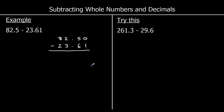We start with the smallest column, which is the hundredths this time. And I've got zero take away 1; I don't want to do that. So I'm going to steal one of the tenths, and that'll be worth 10 in the hundredths. 10 take away 1 is 9. Now the tenths: I've got 4 take away 6. Again, I don't want to do that. So I'm going to steal one of the ones, which will be worth 10 in the tenths. So 14 take away 6 is 8. The decimal point is going to stay where it is.